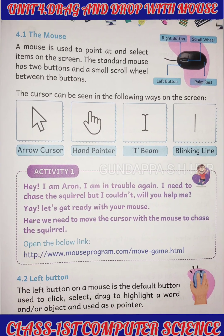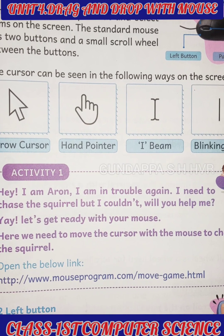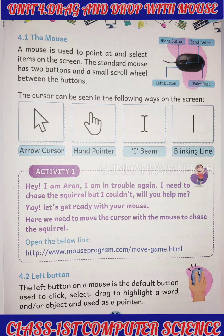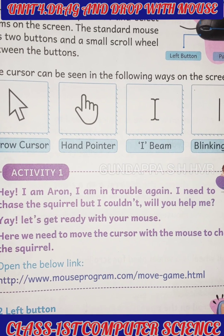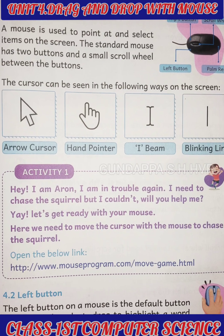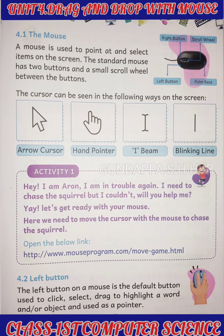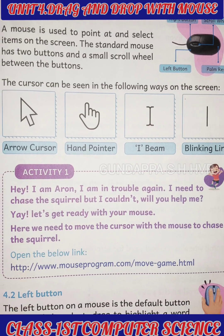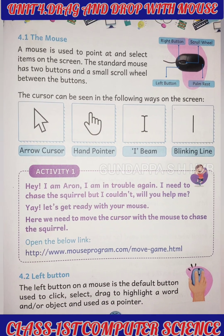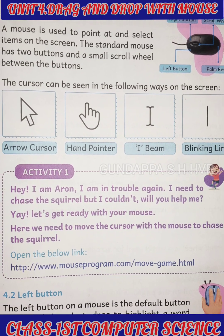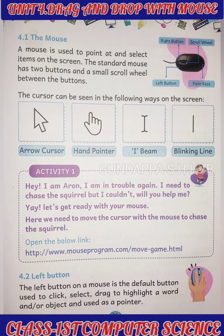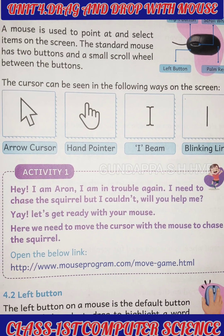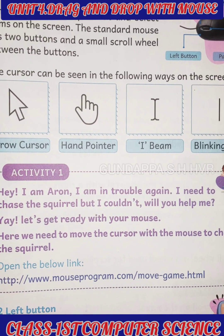The mouse contains two buttons: left button and right button. The left button is the default button used to click, select, drag, highlight a word or object, and use it as a pointer. If you want to click any particular icon or image, or select any particular sentence or word, you use the left button. Most of the time in a computer, we use the left button.